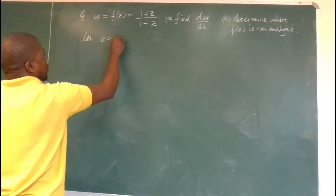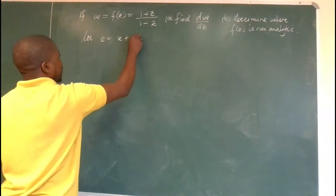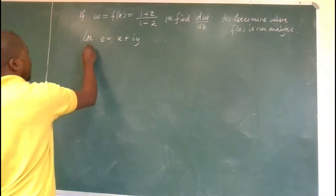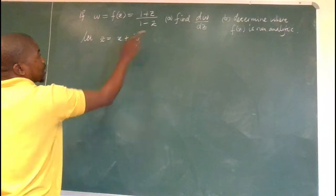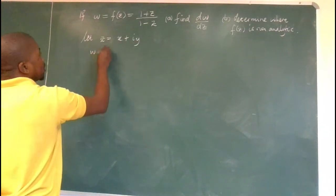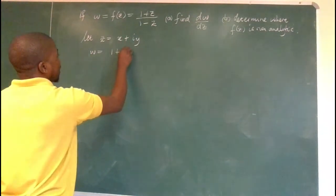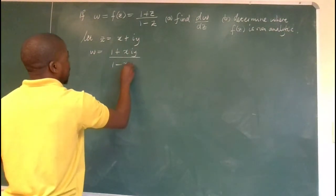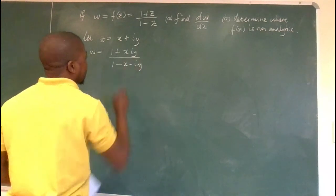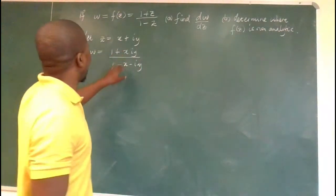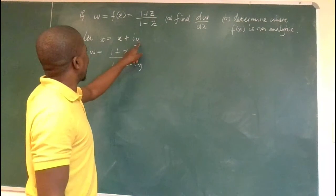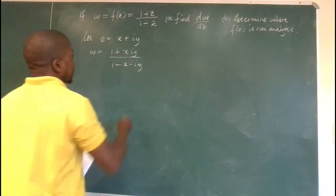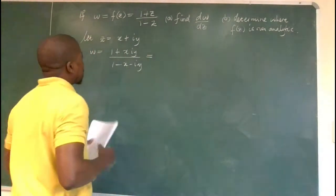Let z be equal to x plus iy — the general complex number. Therefore w is equal to (1 + x + iy) over (1 − x − iy). We are simply plugging z into the function.